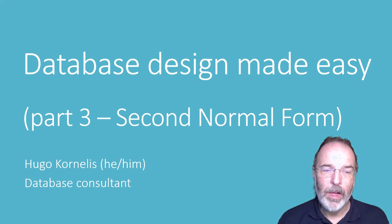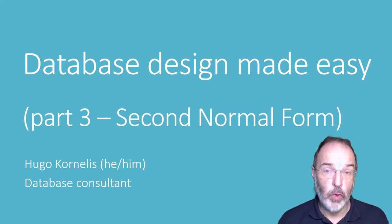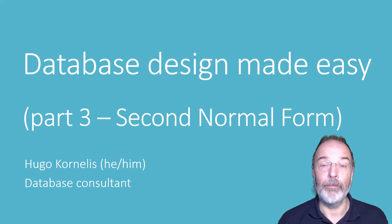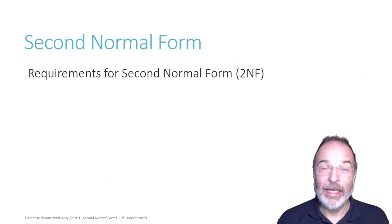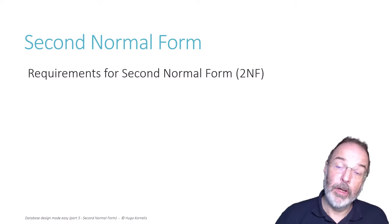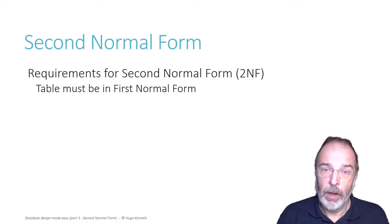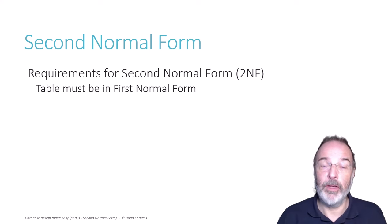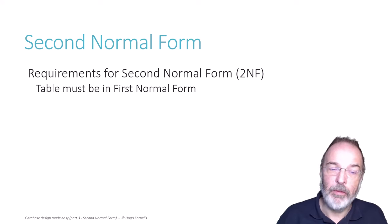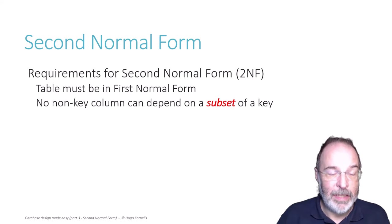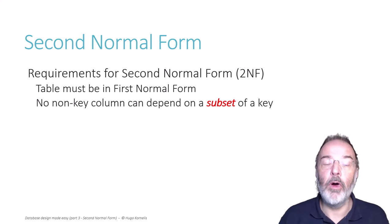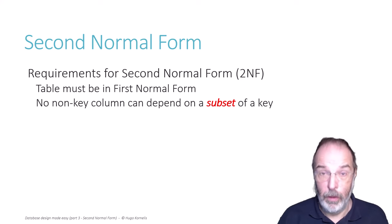Hello and welcome to part 3 of Database Design Made Easy, where we will talk about second normal form. For a table to be in second normal form it has to obey two requirements. The first is simply that it already has to be in first normal form, which we talked about in a previous video. The second requirement is that no non-key column can ever depend on a subset of a key.